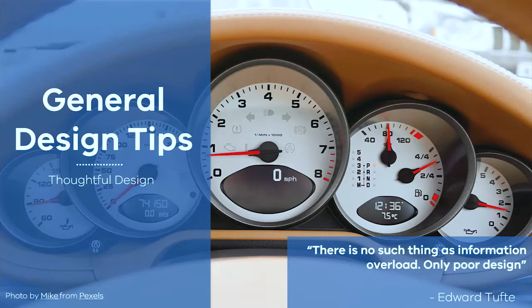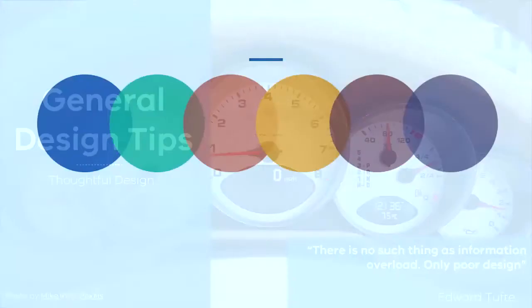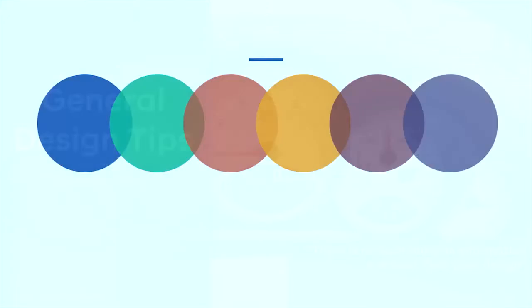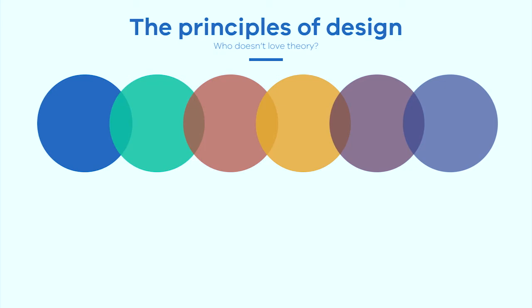Design theory really comes down to six principles we should keep in mind. I'm not going to go into heavy design theory detail — I have a blog post with much more in-depth articles that I'll share at the end. I'm going to touch on those six elements and dig into each one as we go along.